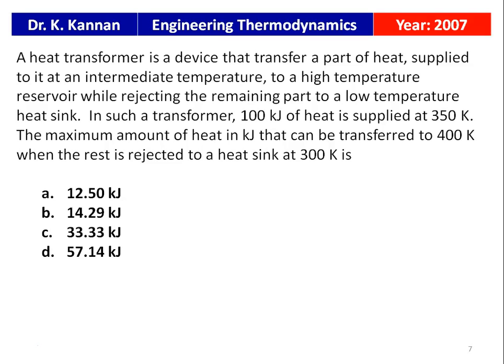Another question from the 2007 question paper. A heat transformer is a device that transfers part of the heat energy supplied to it at an intermediate temperature to a higher temperature reservoir while rejecting the remaining part to a low temperature sink. In such a transformer, 100 kJ of heat is supplied at 350 Kelvin. The maximum amount of heat in kJ that can be transferred to 400 Kelvin when the rest is rejected to a sink at 300 Kelvin is: A) 12.5 kJ, B) 14.29 kJ, C) 33.33 kJ, D) 57.14 kJ.